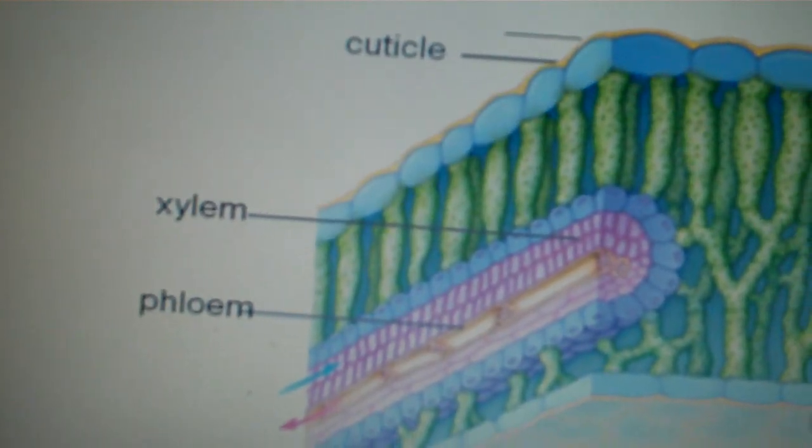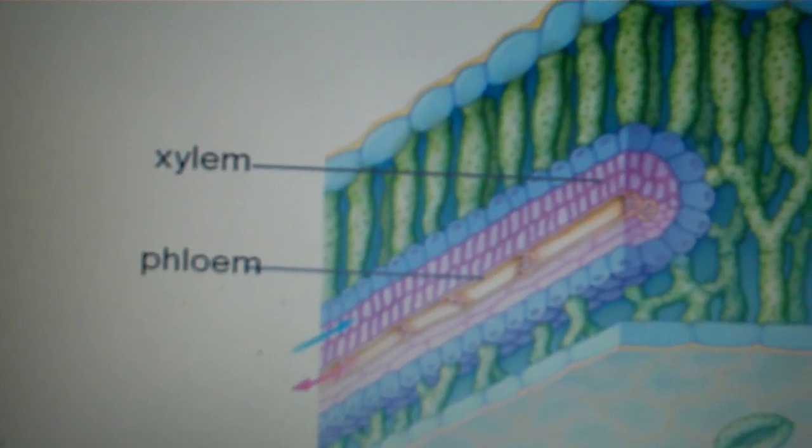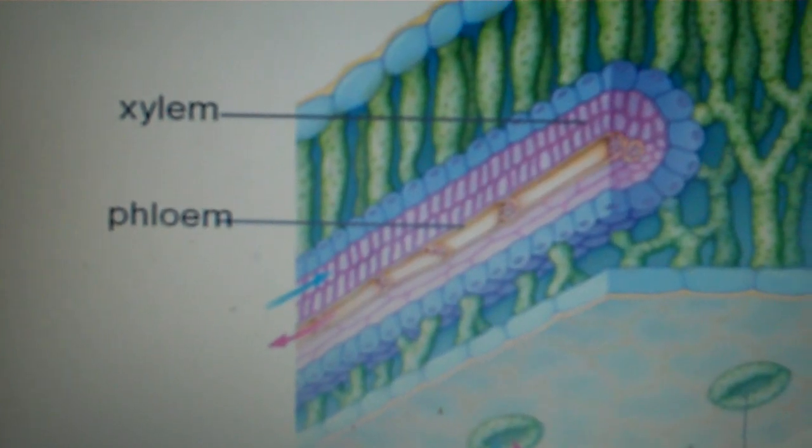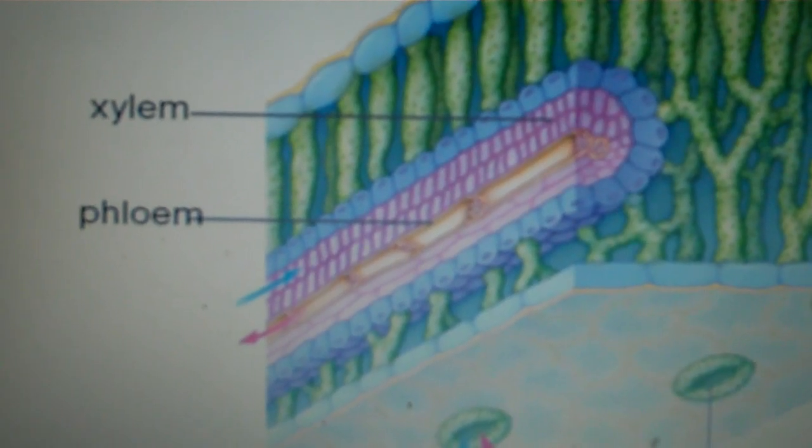Then we also have our vascular tissue, which would be the xylem and the phloem. The reason the vascular tissue is in the leaf is because we know photosynthesis requires water.